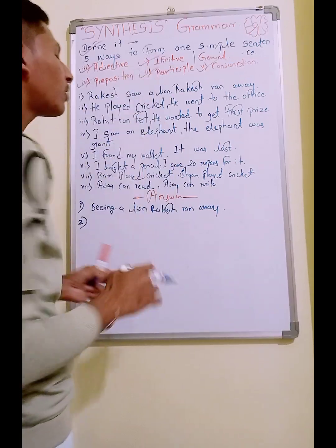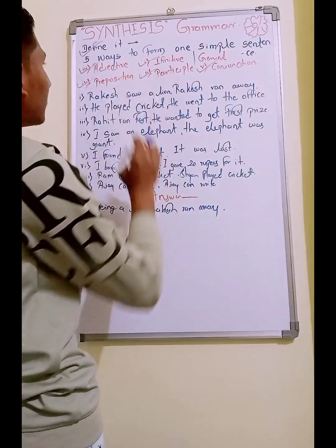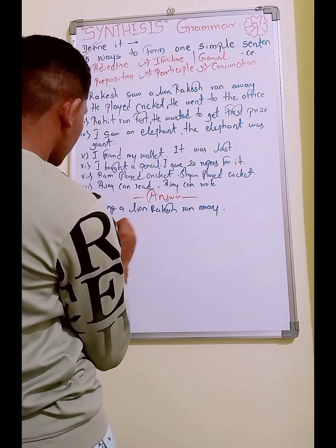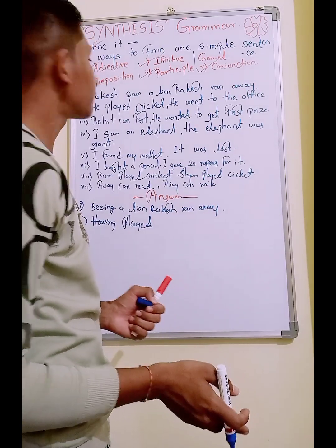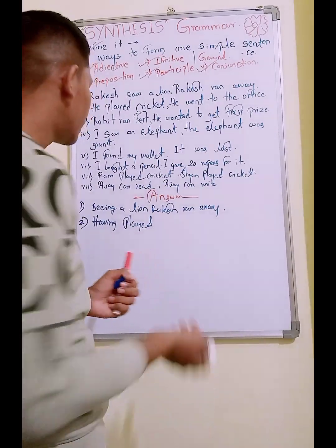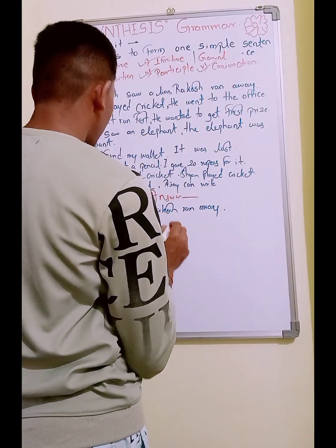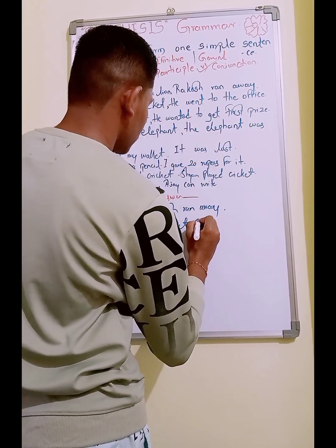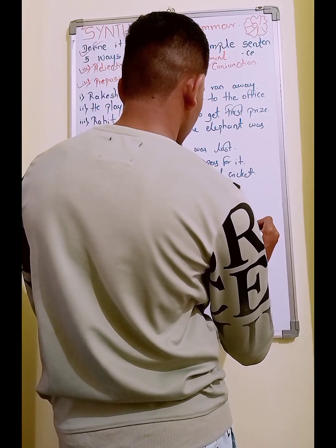We will add a participle here. The answer uses 'having played' — this is the past participle. So the answer is: 'Having played cricket, he went to the office.'